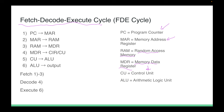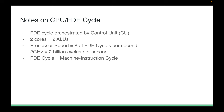Fetch is fetching the data from the RAM; decoding happens in the control unit; execution happens in the ALU. The FDE cycle is orchestrated by the control unit. If there are two cores in a computer — a dual-core processor — that refers to the number of ALUs. Processor speed is the number of FDE cycles per second; a two-gigahertz processor performs two billion FDE cycles per second. The FDE cycle is also called the machine instruction cycle.